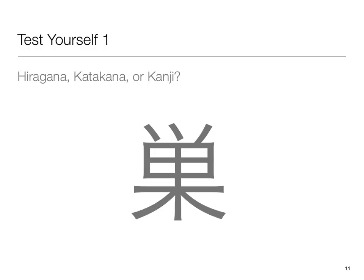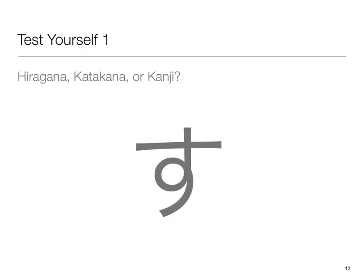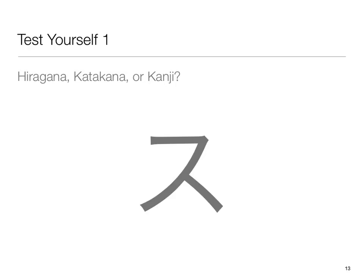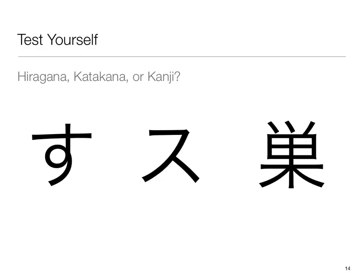Ready to test yourself? I'm going to show you a series of characters. Go ahead and make your best guess at whether it is a hiragana, a katakana, or a kanji. Is this a hiragana, katakana, or kanji? How about this one? So how did you do? The hiragana is the first one — we know it's hiragana because it has loops and curves, the more curvy of the two phonetic systems. The second one is katakana — we can tell by its angular and sharp look. The last one is kanji, and we know that because it has multiple strokes and is far more complex than either of the other two.